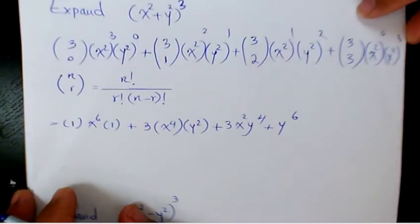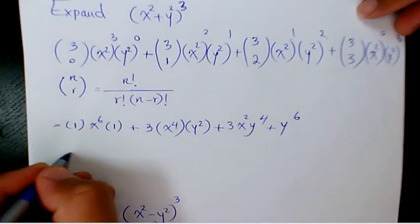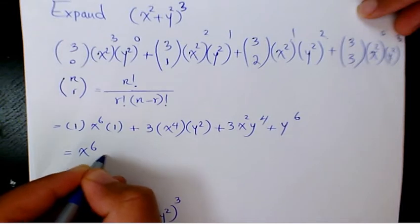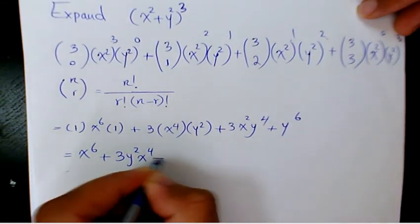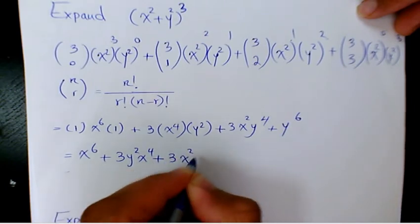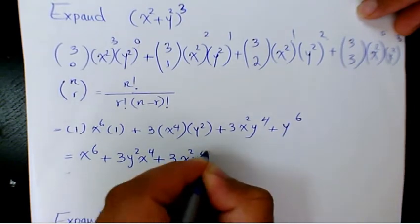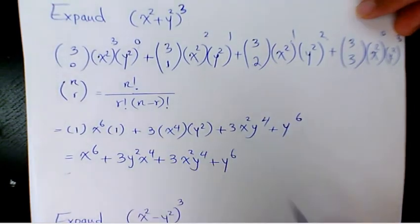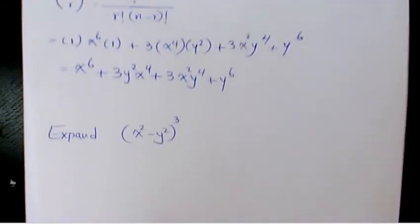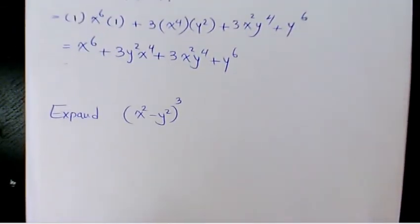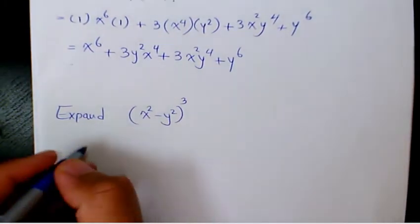So the final answer is x⁶ + 3x⁴y² + 3x²y⁴ + y⁶. That's the answer to (x² + y²)³. Now let's look at (x² - y²)³.